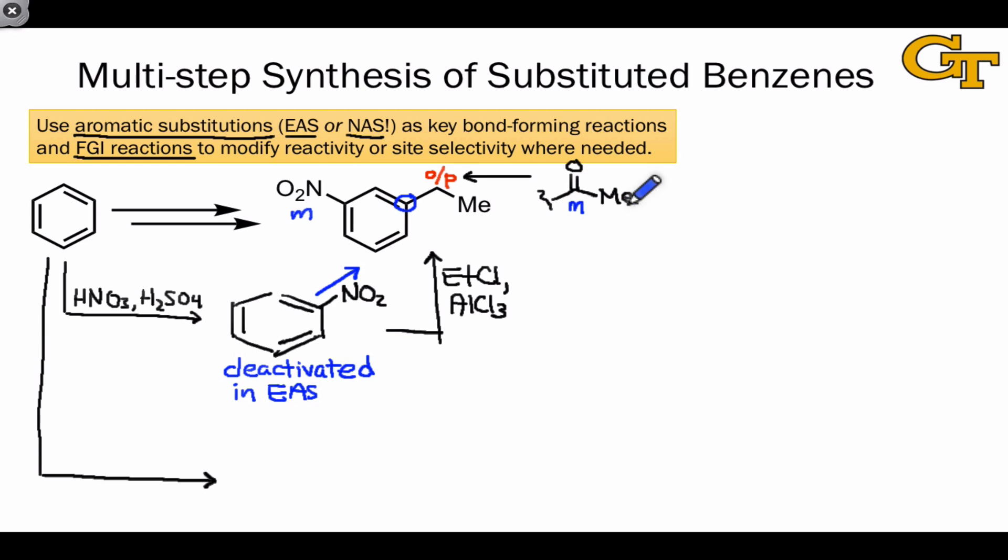So if we installed the acyl group first, and then nitrated, and then converted the acyl group into an alkyl group, we could achieve the same synthetic result and reach the same target. In the forward direction, this means first converting benzene into this synthetic intermediate. This involves Friedel-Crafts acylation conditions. We can then nitrate this intermediate with the assurance that the nitro group will appear meta to the electron-withdrawing acyl substituent.